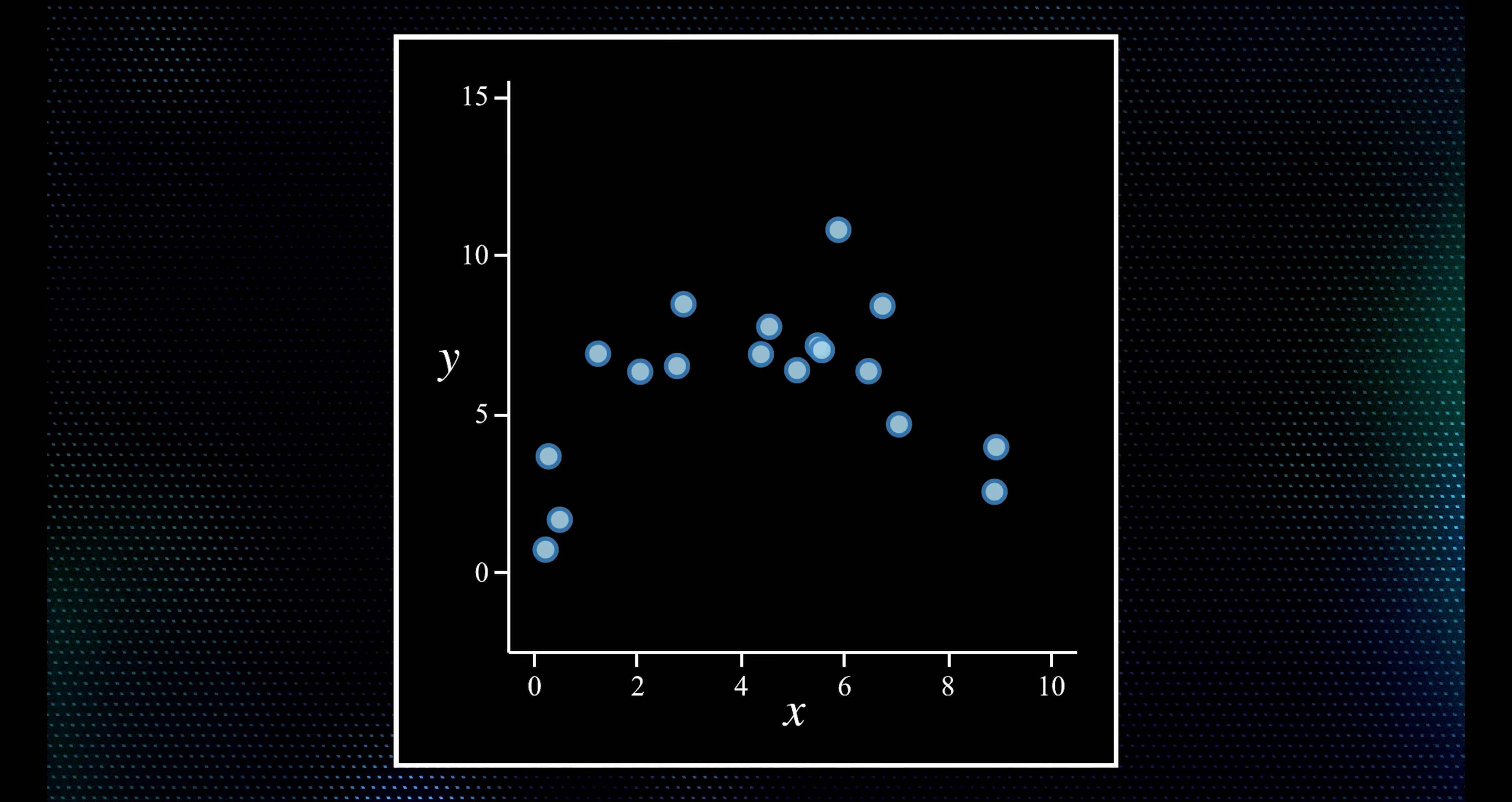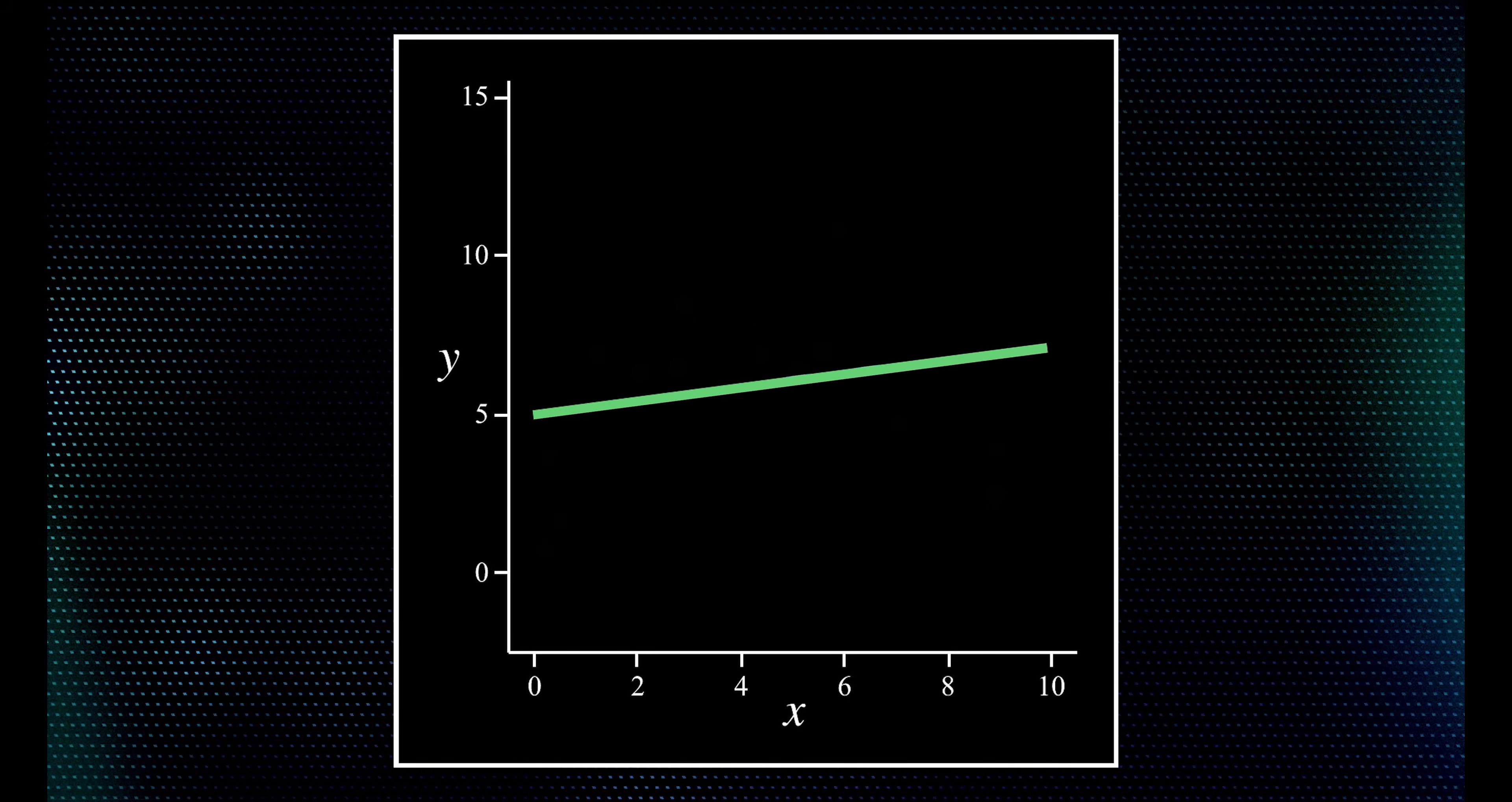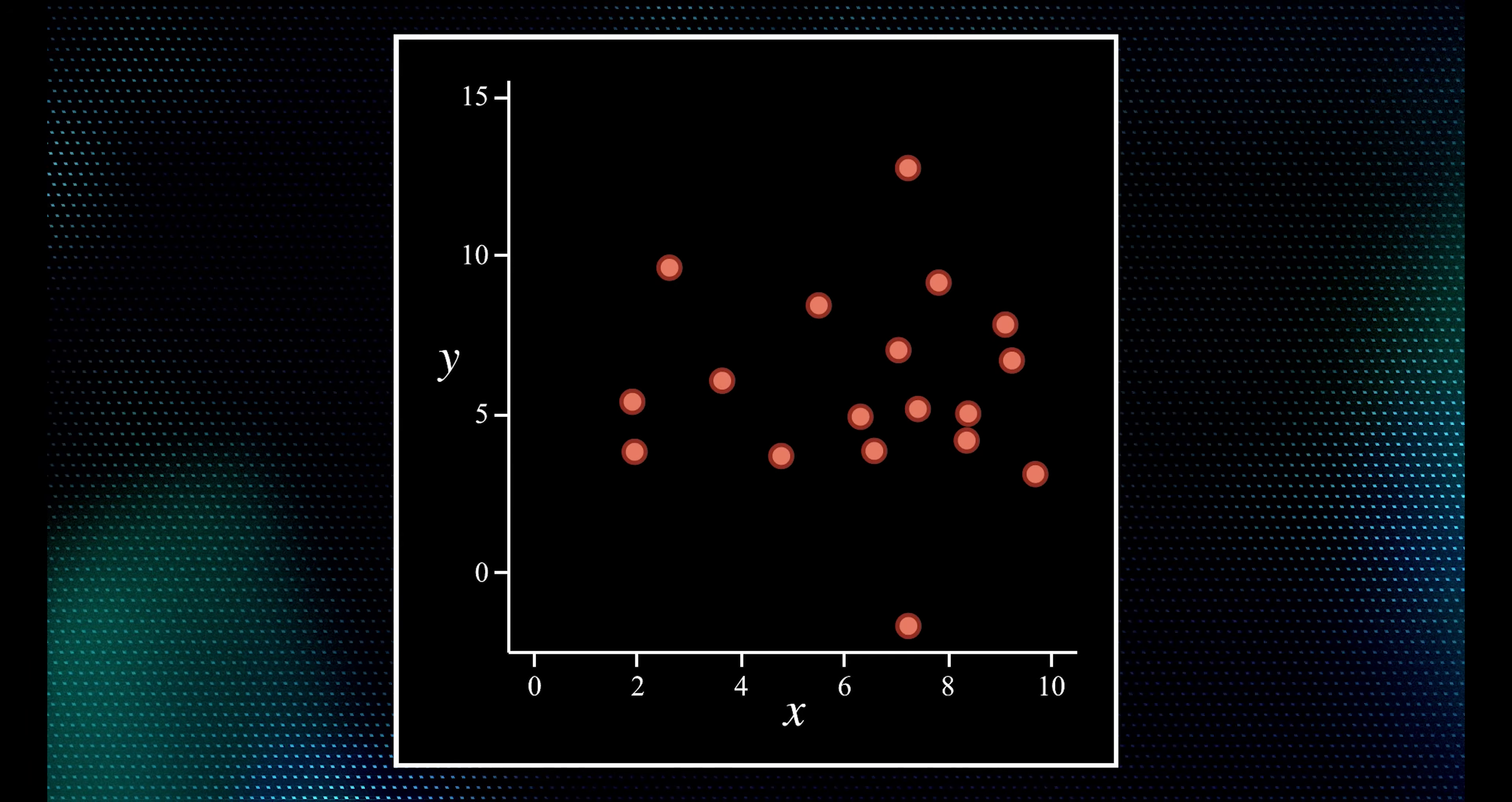Slightly more technically, pretend these points represent real world data. Now, we fit a model to it. Next, we throw away the data we just used, and then we sample from the model we just fit, giving us more data. Notice this data isn't quite like the original data that we started with.